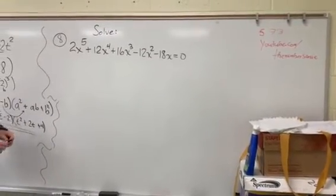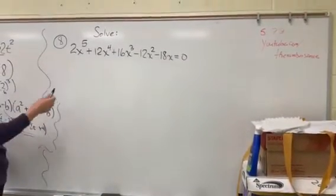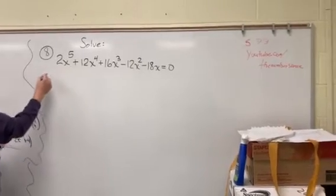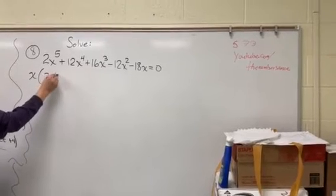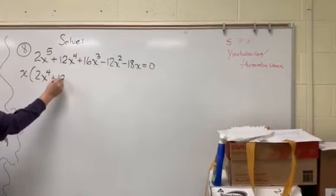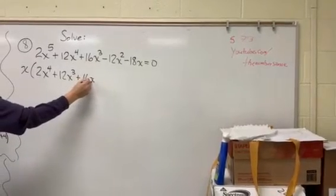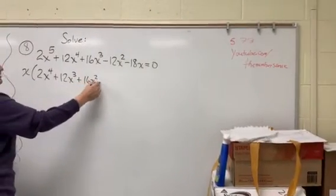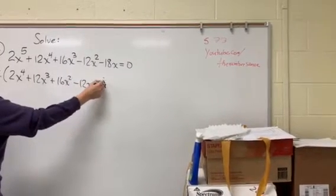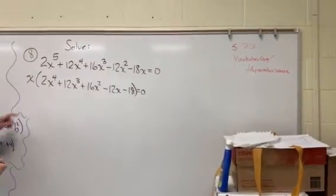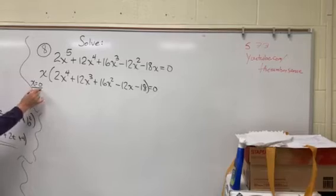The first thing, rule number one, is to find the greatest common factor, and it looks like we can factor an x out of this polynomial. So if we factor out an x, we're going to have 2x to the fourth plus 12x cubed plus 16x squared minus 12x minus 18, and that equals zero. So right away we know that x equals zero is going to be one of our zeros, one of our roots.